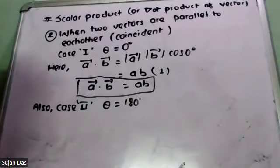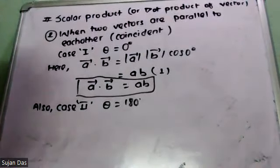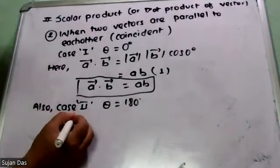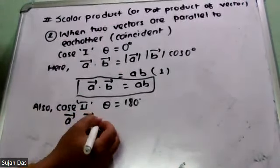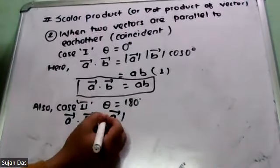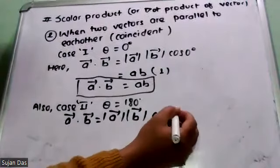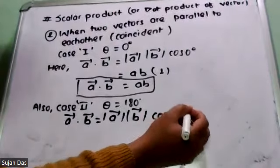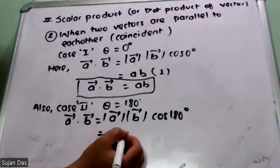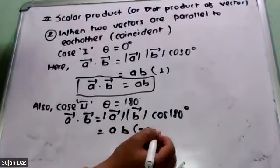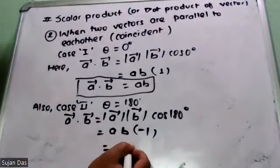Also, when the angle between two vectors is 180 degrees, they are also parallel. In that case, cos 180 degrees equals minus 1, so vector A dot vector B will equal minus AB.